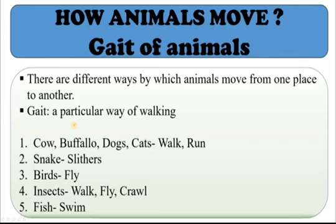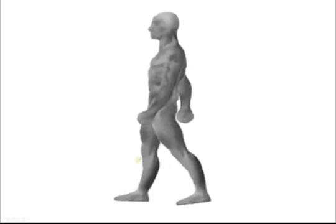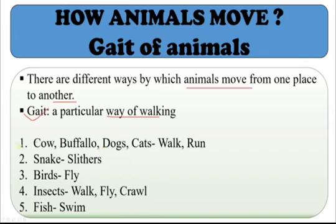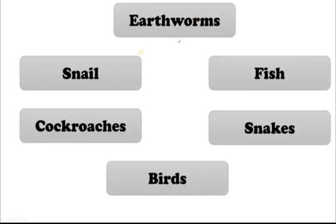Gait of animals means the particular way of walking. Animals can move from one place to another by different modes of movement. Human beings can walk and run; cows, buffaloes, dogs, and cats can also walk and run; snakes can slither; birds can fly; insects can walk, fly, or crawl; and fish can swim.